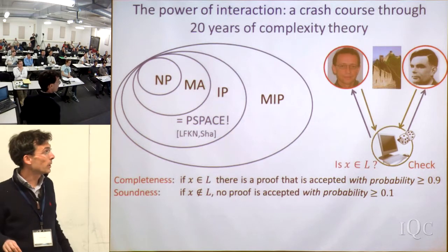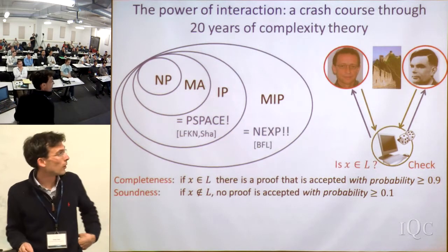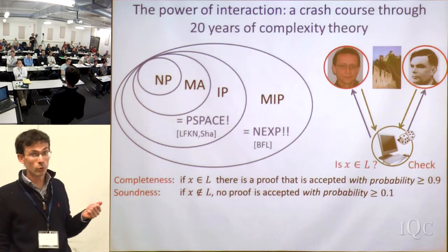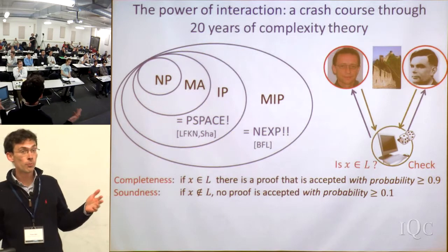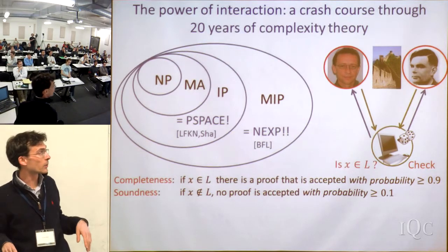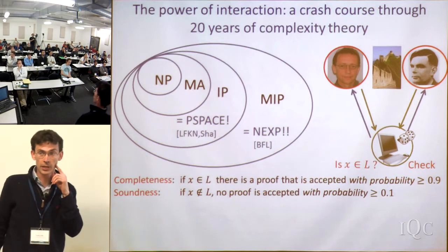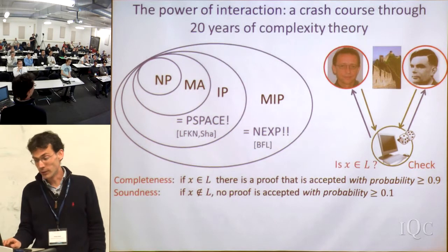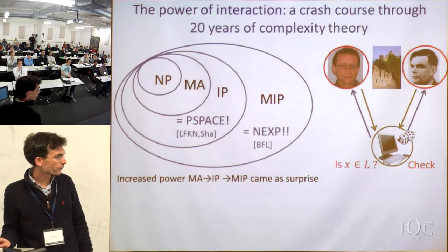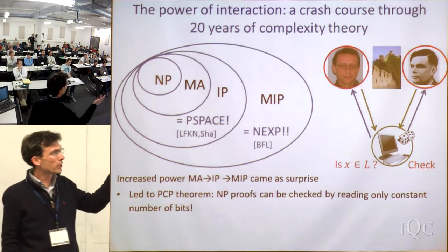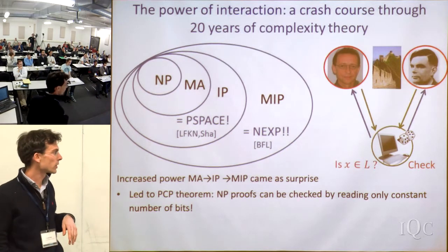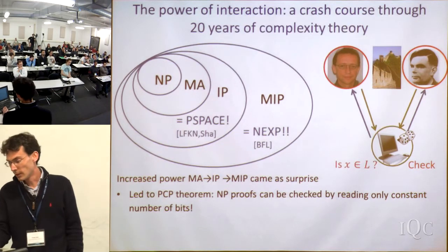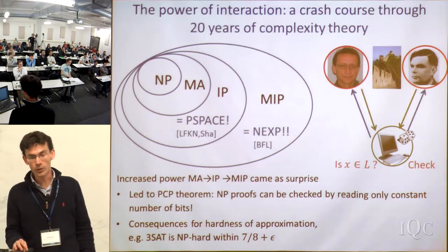You get a class called MIP — Multi-Prover Interactive Proofs. The big result of the 90s by Babai, Fortnow, and Lund was that you get a much bigger class. Because you're allowed to talk to two provers instead of one, you have much more power: you get NEXP, Non-Deterministic Exponential Time. These results and the techniques used to prove them have had a very big influence on complexity theory — they led to the PCP theorem and results in hardness of approximation.